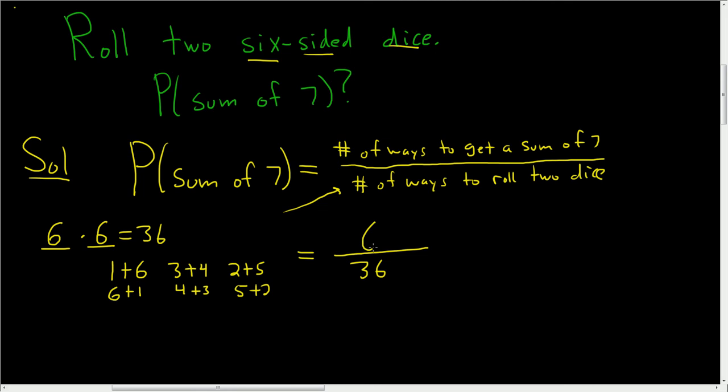So there are six ways to roll a sum of 7. So this is equal to 1 over 6. I hope this helps.